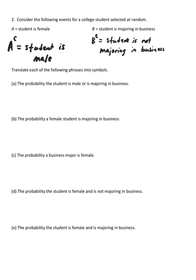Part A, the probability the student is male or is majoring in business. You can also just write the word or, or majoring in business. That's event B. Actually, I'm going to write it both ways and that way you can pick which one you prefer. So that's the probability of A complement or B.